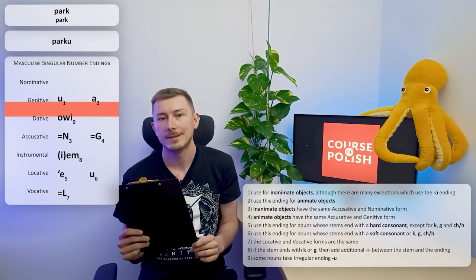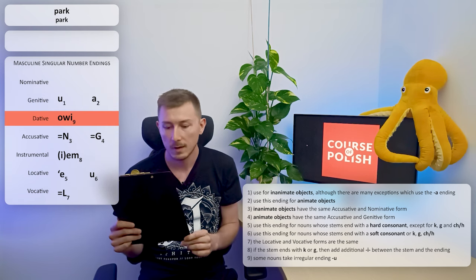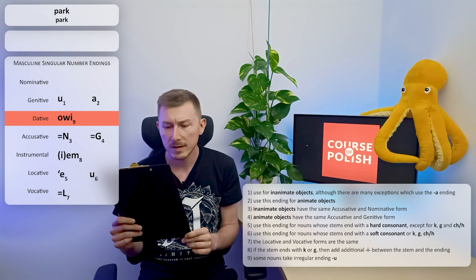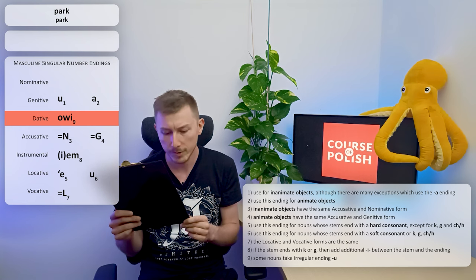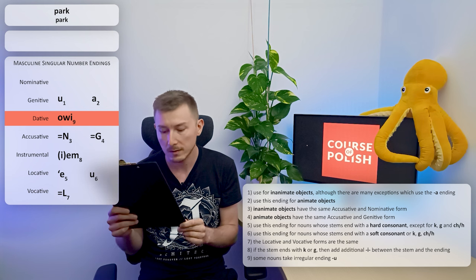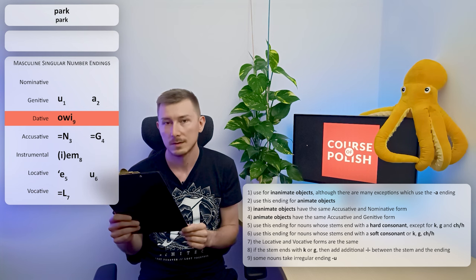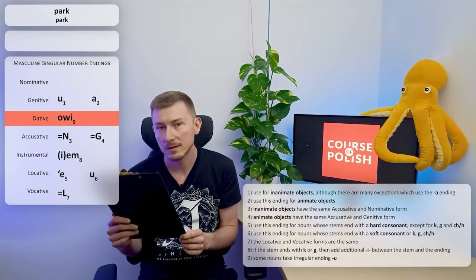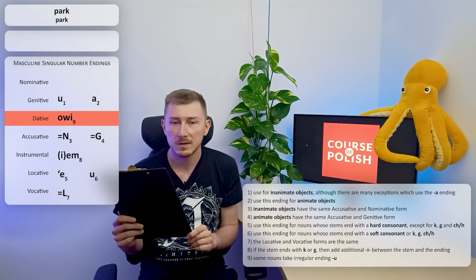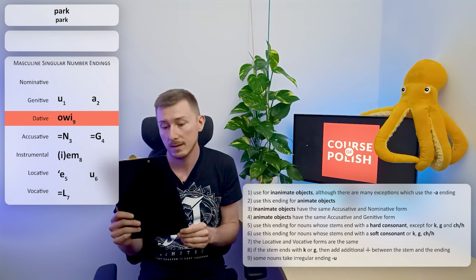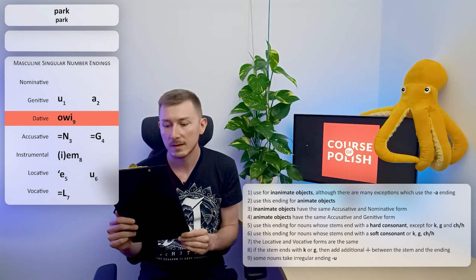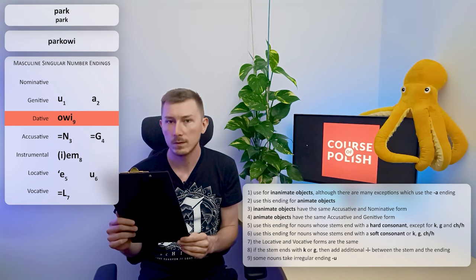So we are using the first ending U, and the form of our noun in genitive singular number will be PARKU. Next case, dative. Here we have one option, one ending OVI, but there is also a rule that we have to read. The rule says that some nouns take an irregular ending U. Again, you have to learn by heart if a noun has irregular ending, but for most of the nouns just apply the basic regular ending. So if we apply this ending to our noun, we will get the form PARKOWI.